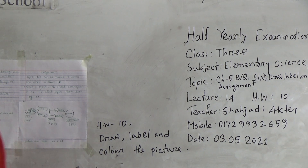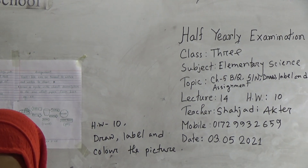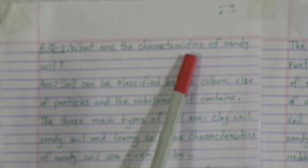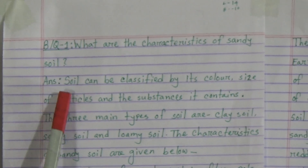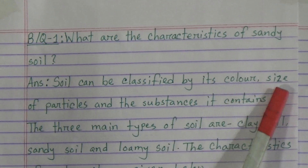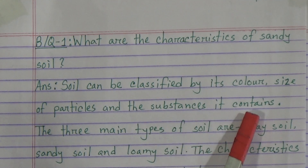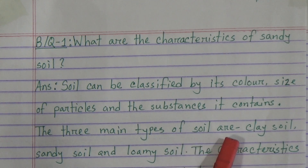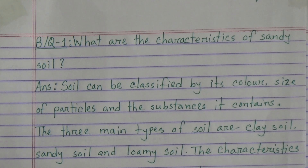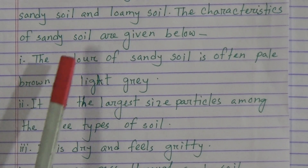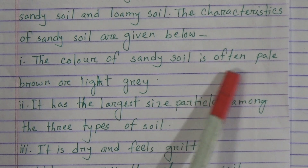My dear students, let's start our class. Chapter 5, broad question number 1: What are the characteristics of sandy soil? Answer: Soil can be classified by its color, size of particles, and the substance it contains. The three main types of soil are clay soil, sandy soil, and loamy soil. The characteristics of sandy soil are given below. Number one: the color of sandy soil is often pale brown or light gray.